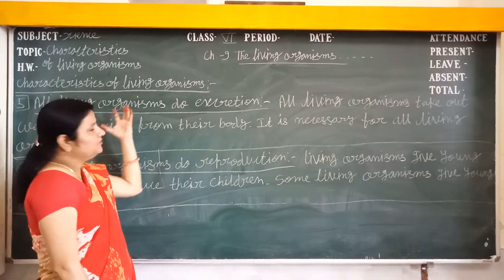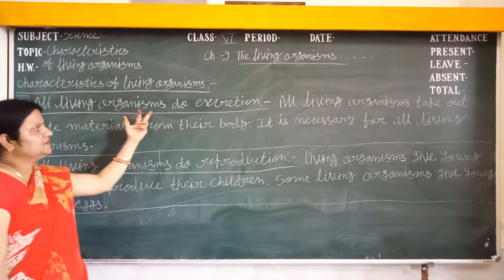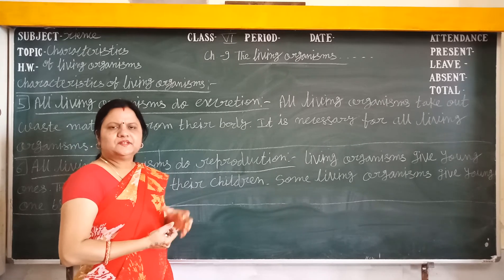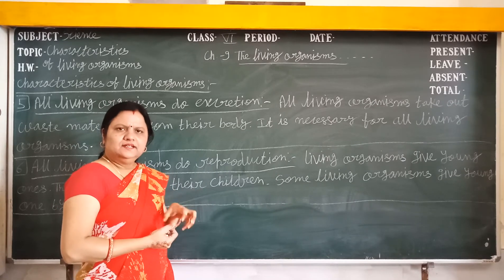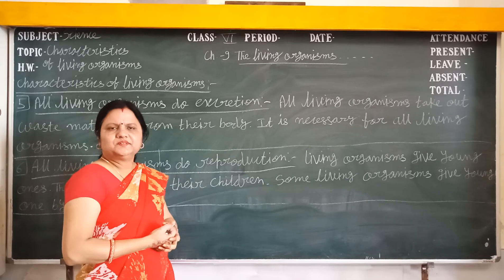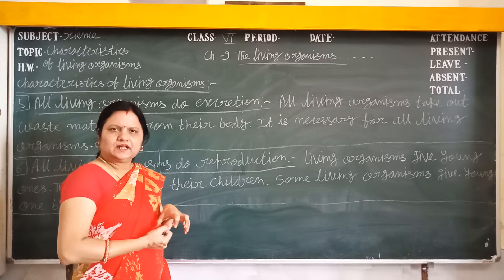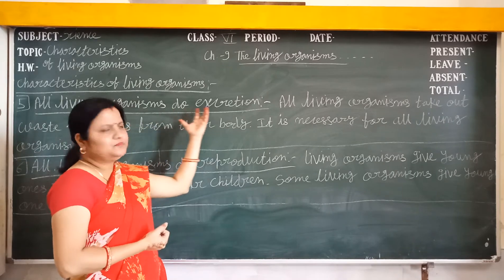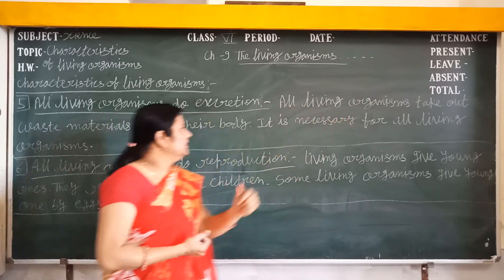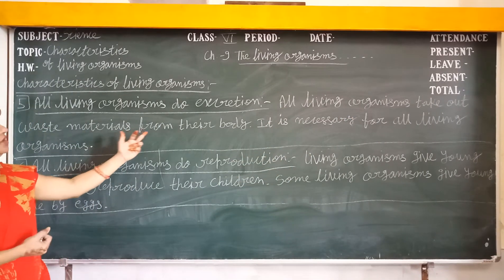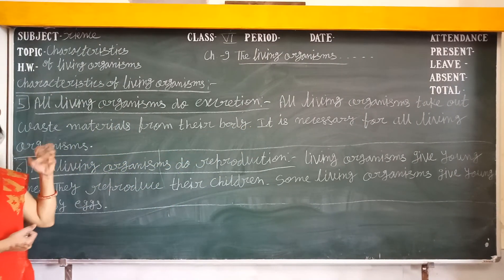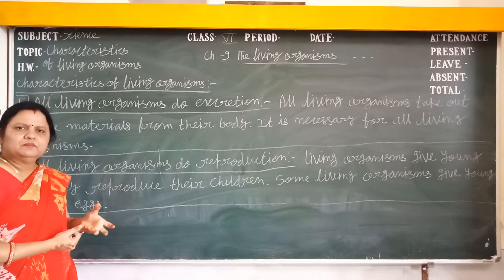Next, all living organisms do excretion. Excretion means taking out waste material present in the body. The digested part stays in the body, but the undigested part — which contains toxic and poisonous materials — must be removed. It is necessary to excrete these waste materials; otherwise, toxic and poisonous substances would remain in the body.